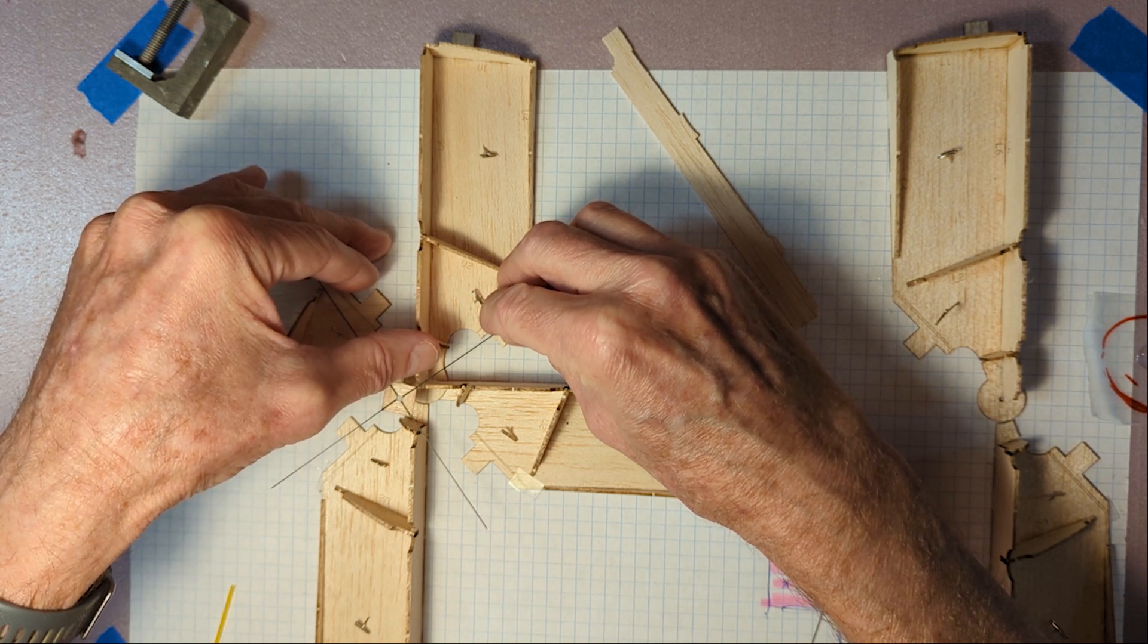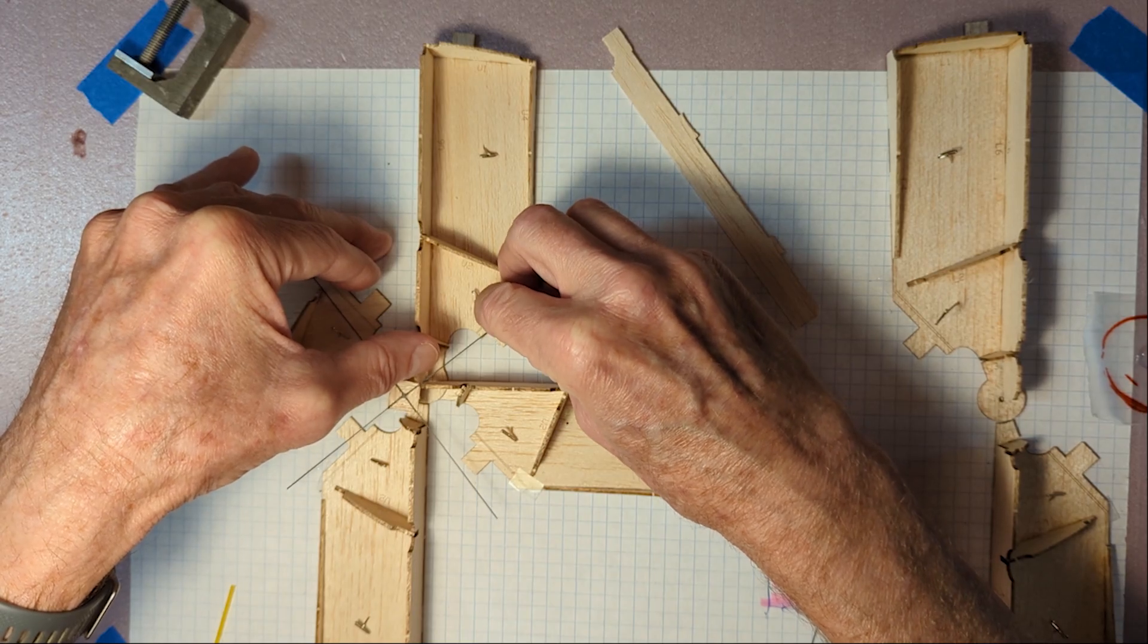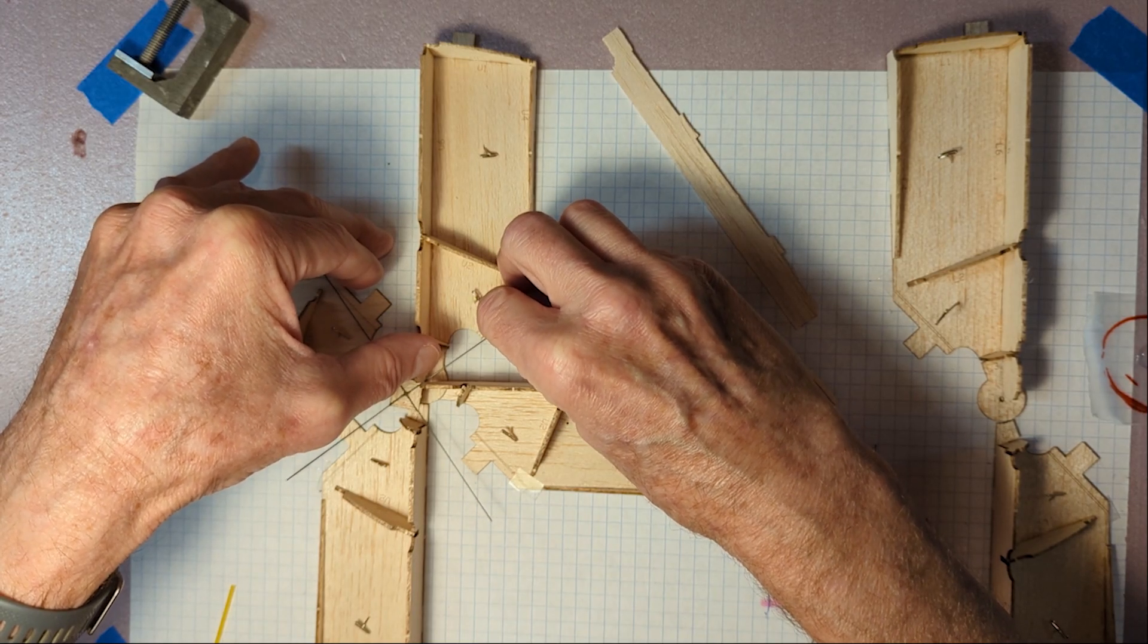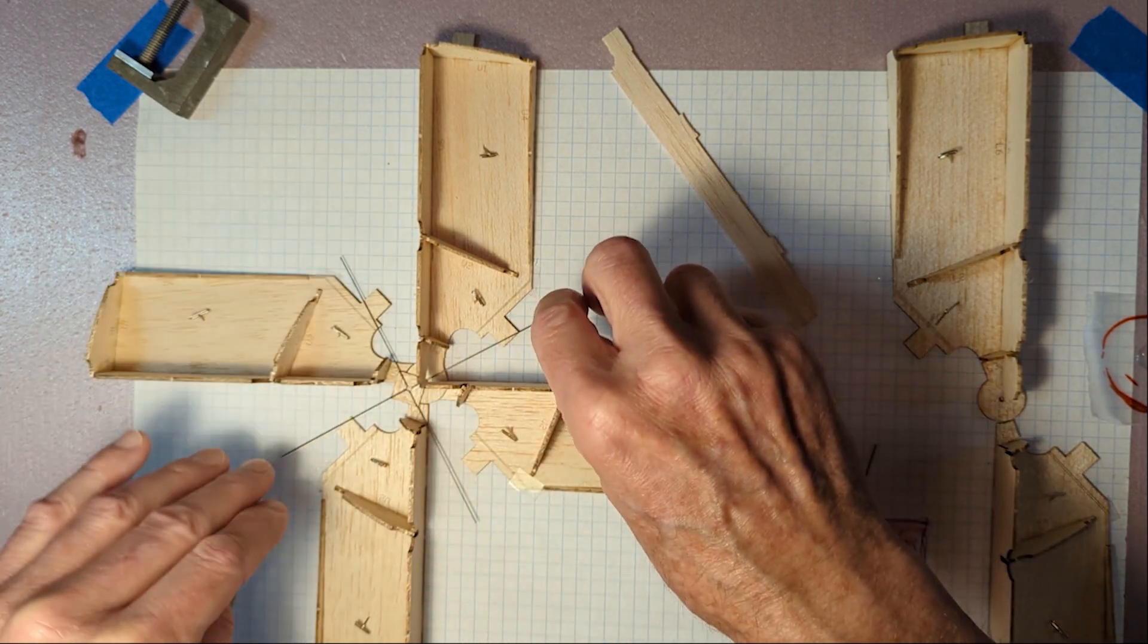I'm going to bend this little piece of wood out of the way, because the rod fits very close to that piece of wood, and just ease this inner trailing edge construction into the jig.